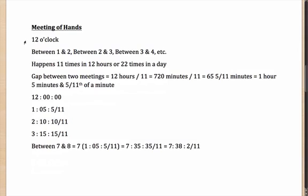You know that the hands meet at 12 o'clock. Between 1 and 2, the hands will meet somewhere because the minute hand is faster and will gain an extra lap over the hour hand. So between 1 and 2 they will meet — at some time around 1:05 roughly. Between 2 and 3 they will meet, between 3 and 4 they will meet, and essentially they will meet once in every gap of an hour.